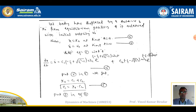Differentiating equation 1 gives: ẋ = C1·(−ζ + √(ζ²−1))ωn·e^[(−ζ + √(ζ²−1))ωn·t] + C2·(−ζ − √(ζ²−1))ωn·e^[(−ζ − √(ζ²−1))ωn·t]. Applying the boundary conditions x = x₀ and ẋ = v₀ at t = 0 into this differentiated equation.